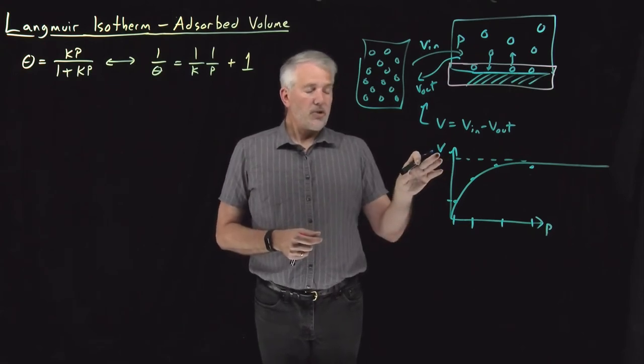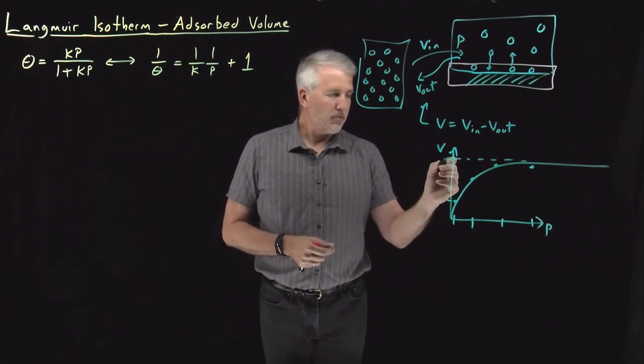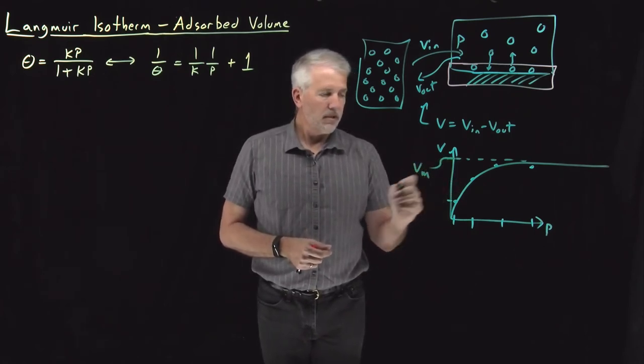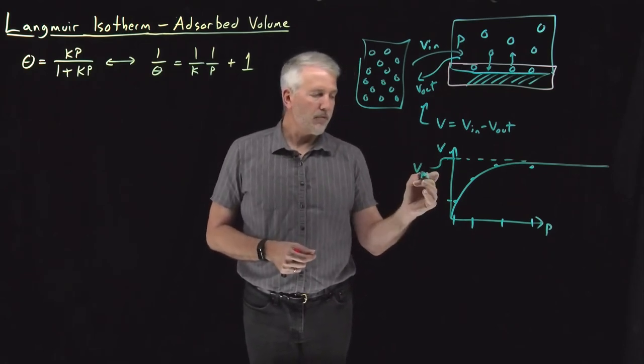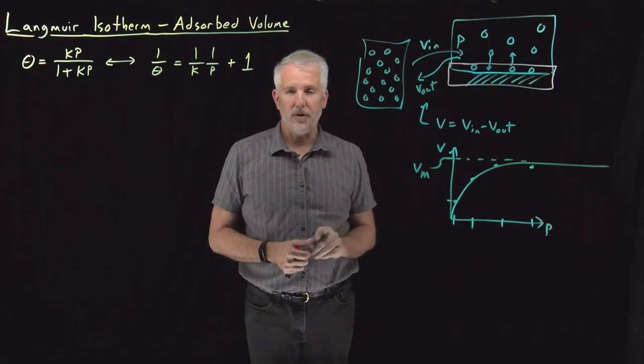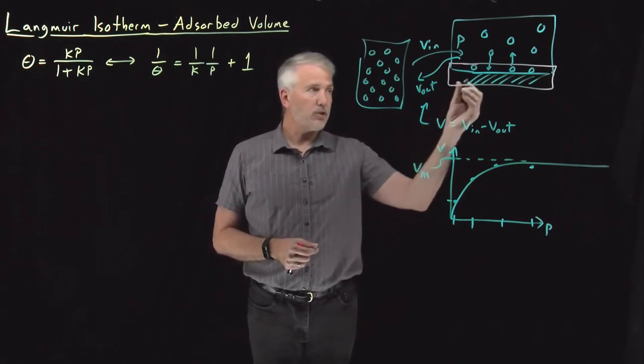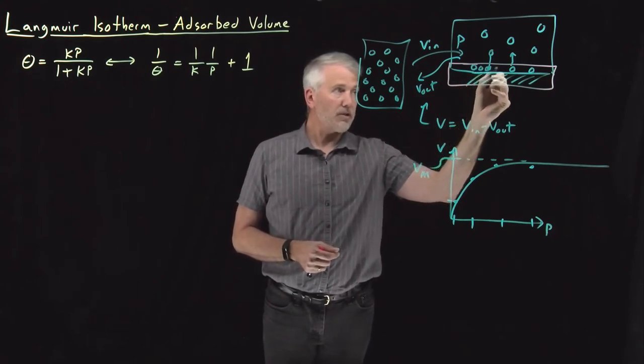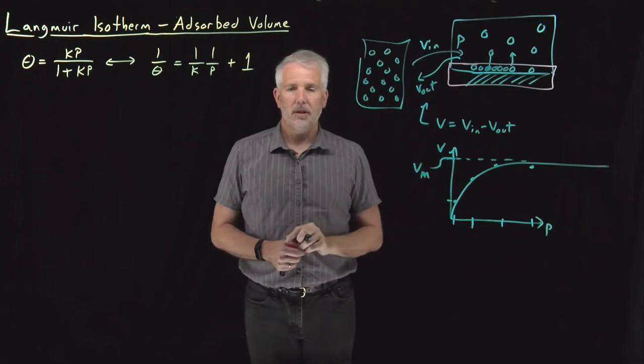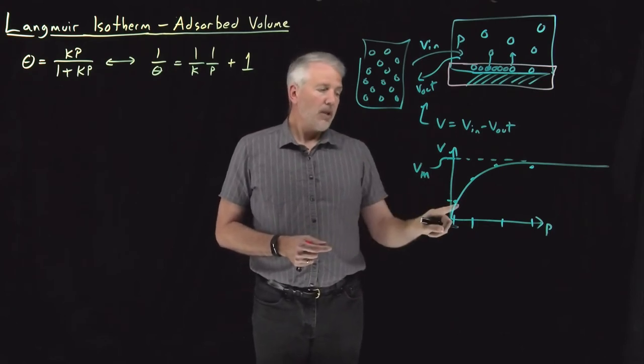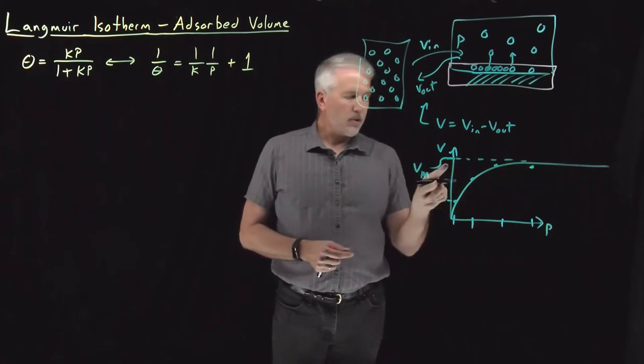But since I'm measuring volume rather than surface coverage, it's going to approach some volume that we'll call V sub m. You can think of it as Vm for max. It's the maximum amount of volume that will adsorb onto the surface or m for monolayer. It's the volume of gas that's equivalent to a full monolayer if all the surface sites were occupied by adsorbed molecules. So, by doing this experiment at a number of different pressures, we can obtain the value of V sub m.